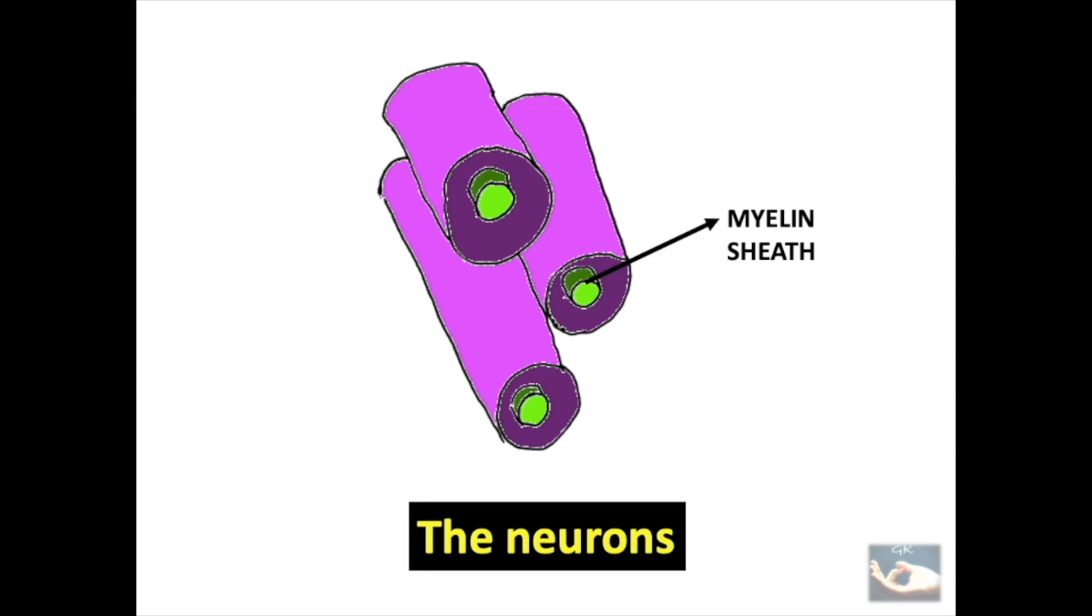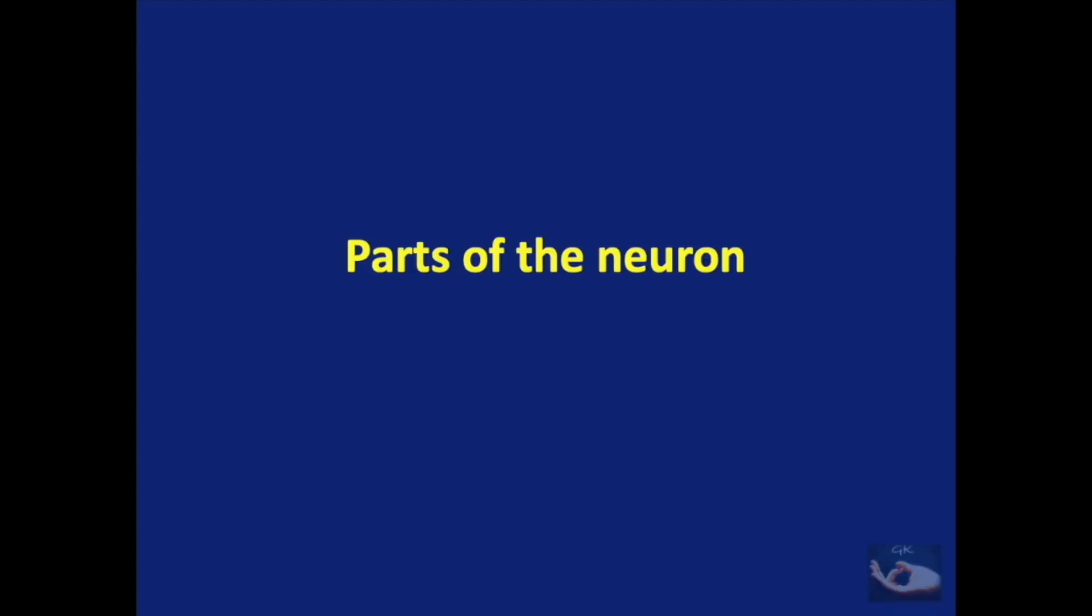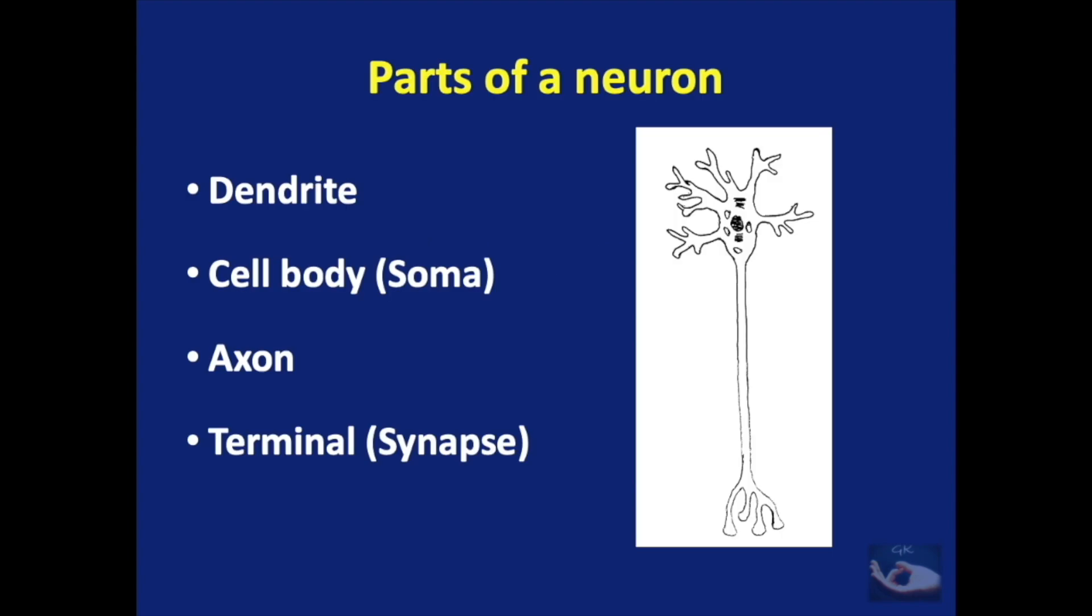To understand how this myelin sheath has formed and how it surrounds the axon, we shall now look into the detailed structure of the neuron. The basic parts of the neuron are the dendrites, the cell body or the soma, the axon and the terminal which is otherwise known as the synapse.